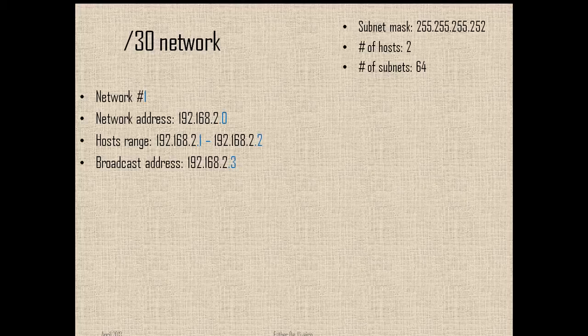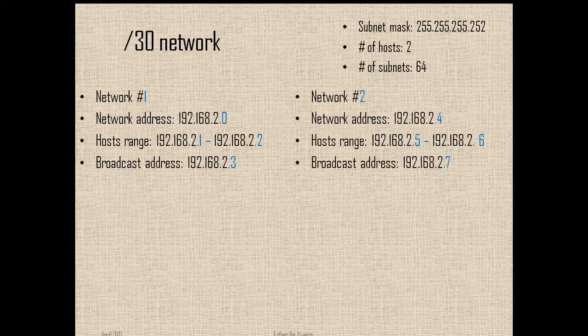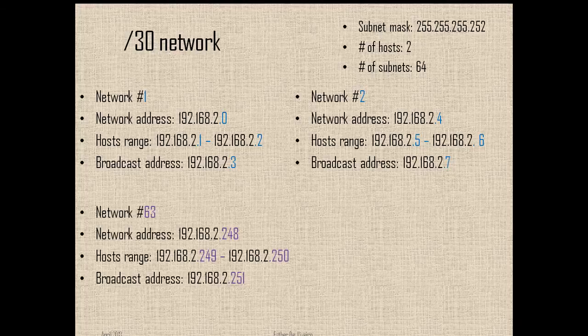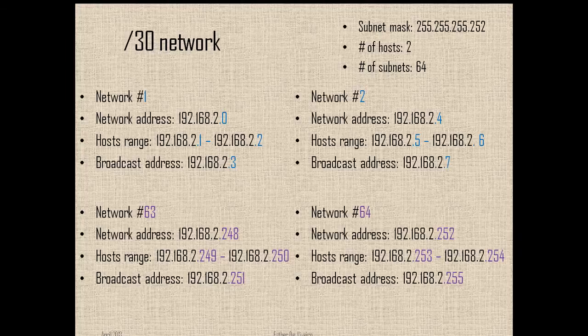So let's check the IPv4 IP address allocation. Network number 1 starts at 0 and ends at 3. Network number 2 starts at 4 and ends at 7. And you're going to do this until you have all 64 subnets. Network number 63 is going to start at 248 and end at 251, and network 64 is going to start at 252 and end at 255.